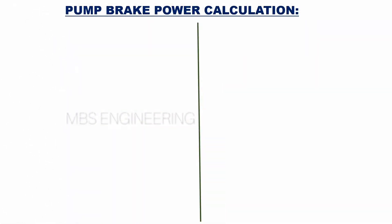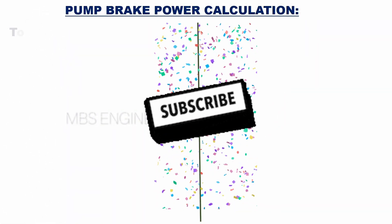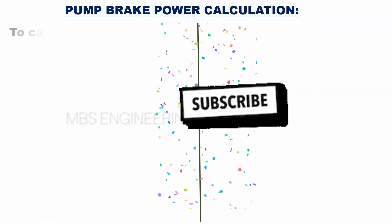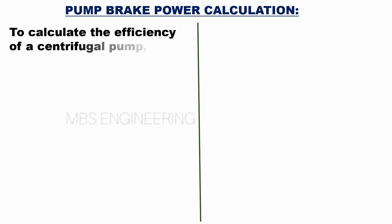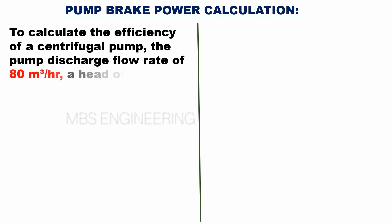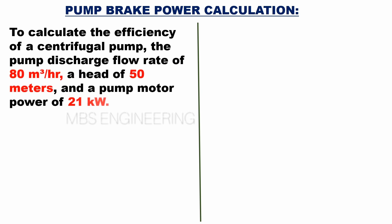We will now calculate the pump brake power for a centrifugal pump using the following sample example. To calculate the efficiency of a centrifugal pump: the pump discharge flow rate is 80 cubic meters per hour, a head of 50 meters, and a pump motor power of 21 kilowatts.